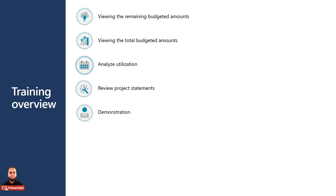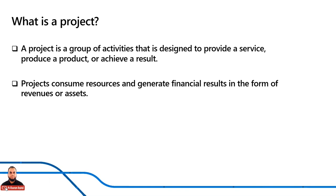Let's start with what is a project. A project can be defined as a group of activities designed to provide a service, produce a product, or achieve a result. A project needs to have a definite timeline and definite targets or goals — it can be a service to render, a finished product to manufacture, or a result to achieve. These three outcomes define what we call a project.